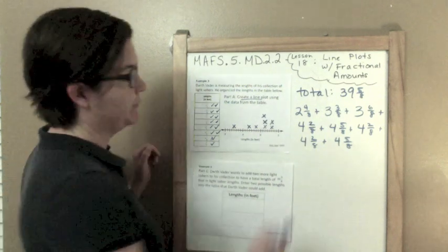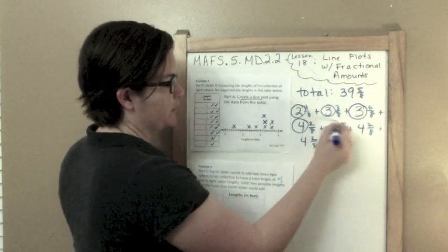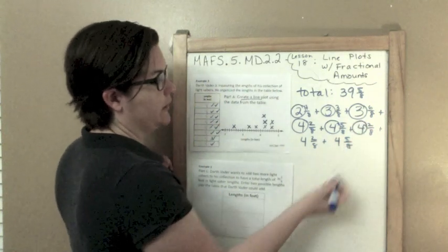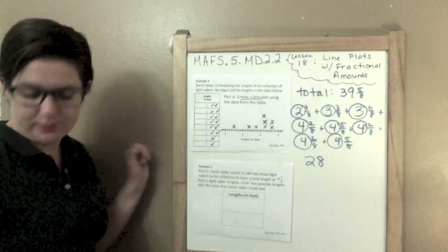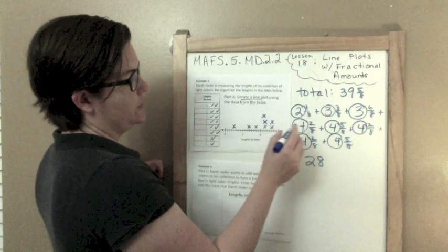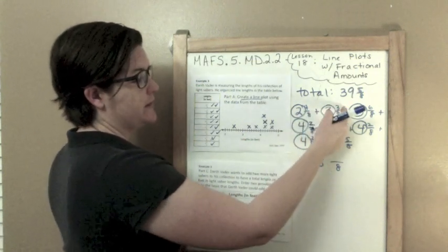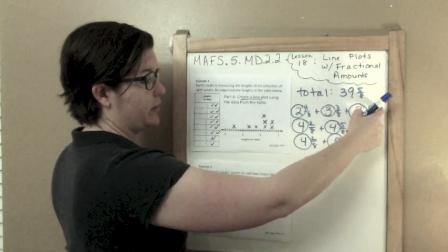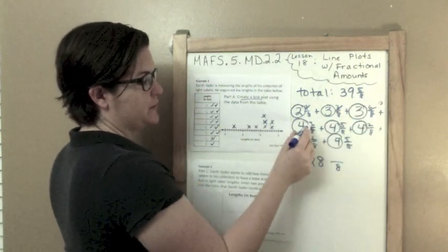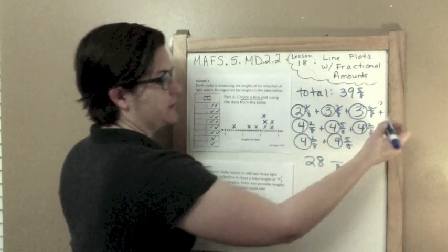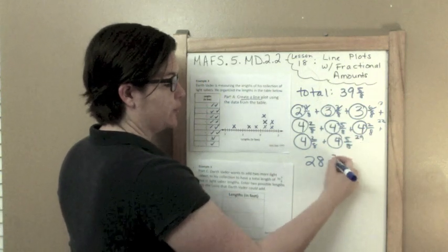Let's do the whole numbers first. 2 plus 3 is 5, plus 3 is 8, 8 plus 4 is 12, 12 plus 4 is 16, 16 plus 4 is 20, 20 plus 4 is 24, 24 plus 4 is 28. And now I'm going to add my fractions. It's all going to be eighths, and then I can just add the numerators. So 4 plus 3 is 7, 7 plus 6 is 13, 13 plus 2 is 15, 15 plus 5 is 20, 20 plus 2 is 22, 22 plus 2 is 24, and 24 plus 5 is 29. So 29 eighths.